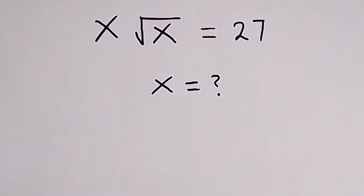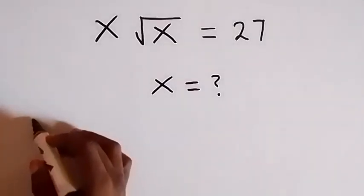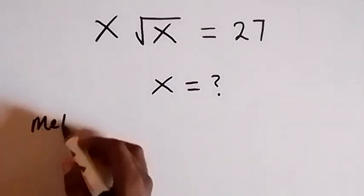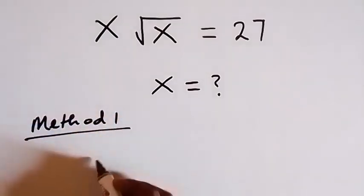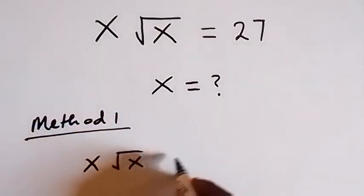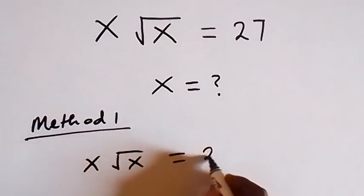Hello, you are welcome. How to find the value of x in this nice square root simplification? From here, let's use two methods. The first one, method 1, and from what we have, which is x root x equals to 27.